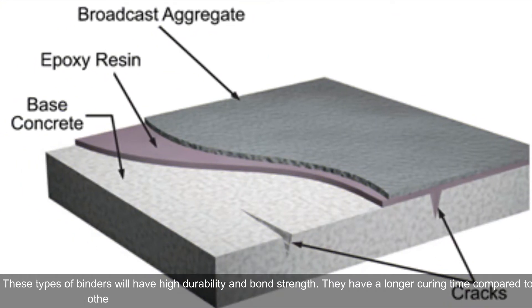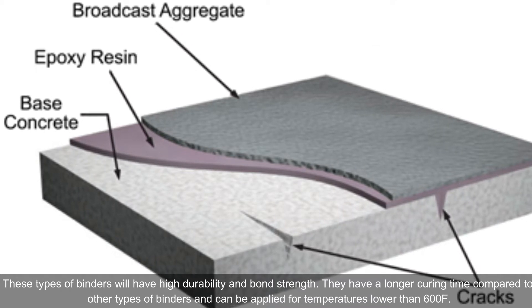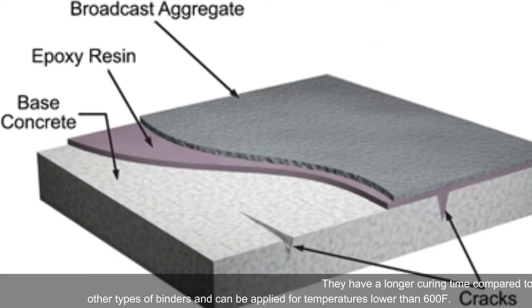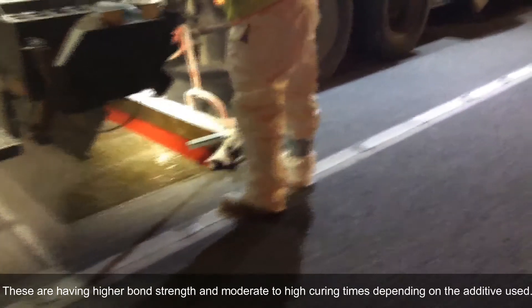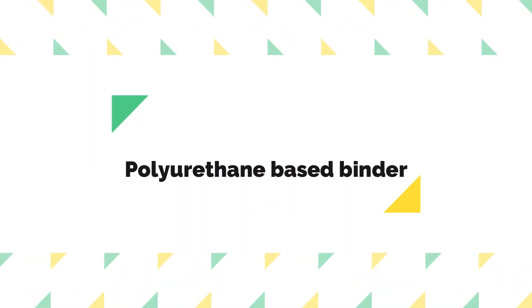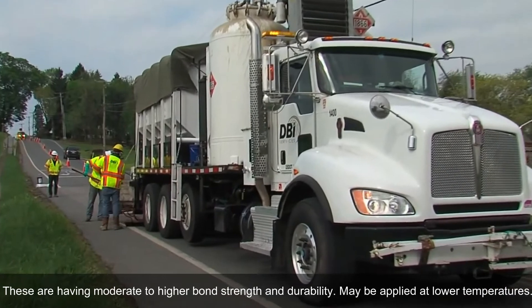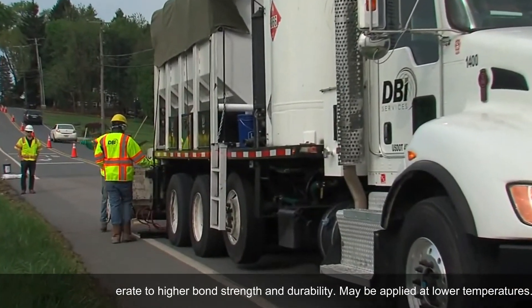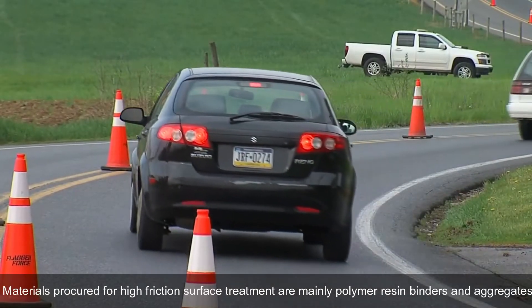Epoxy-based binders have high durability and bond strength, but have a longer curing time compared to other binder types and can be applied at temperatures lower than 60°F. Polyester-based binders have higher bond strength and moderate to high curing times depending on the additive used. Polyurethane-based binders have moderate to higher bond strength and durability, and may also be applied at lower temperatures.